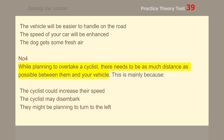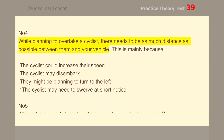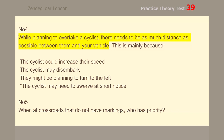Number 4. While planning to overtake a cyclist, there needs to be as much distance as possible between them and your vehicle. This is mainly because the cyclist may need to swerve at short notice.